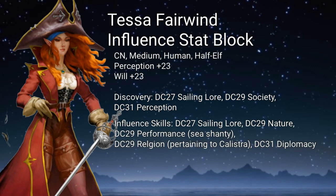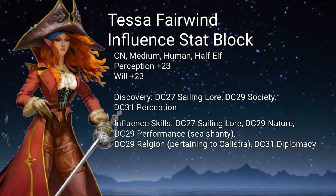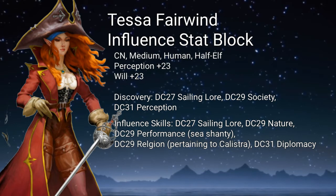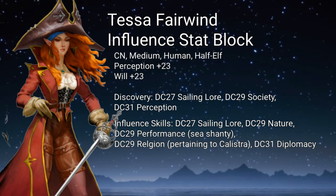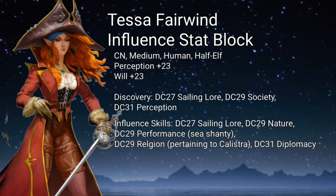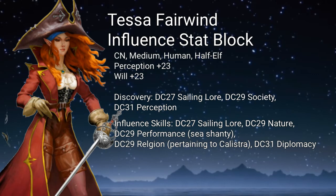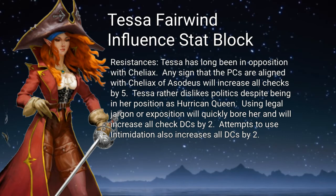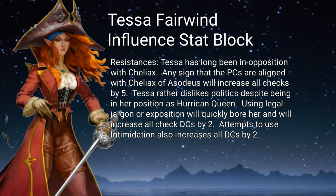Now we can look at different skills that a PC could use to influence Tessa Fairwind. Sailing Lore or Nature may be of vital importance as she loves to sail in the open sea. Performance could also come into play if a PC wishes to perform a sea shanty for her. Religion could be important as her own mother was the priestess of Calestra. Notice that Diplomacy actually has the highest DC on the list — it is always an option, but others may be better. Some NPCs are resistant to certain tactics or biased against certain types of people and may get defensive when certain topics come up, making it harder for a PC to convince them.